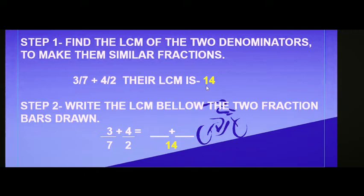Let us do the skip counting to find the LCM. For the denominator 7: 7, 14. For the denominator 2: 2, 4, 6, 8, 10, 12, 14. So the LCM is 14 — they meet at 14.